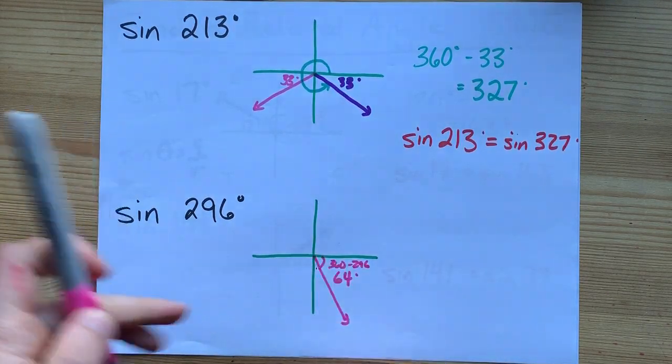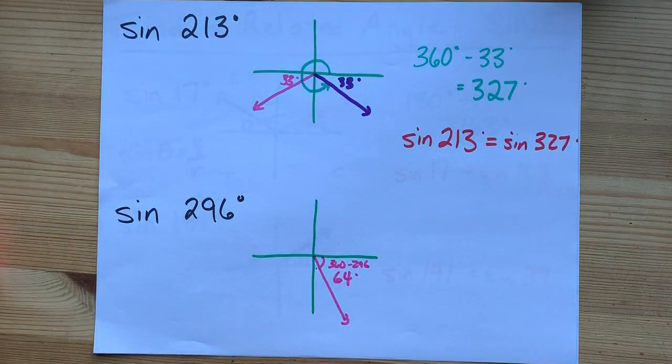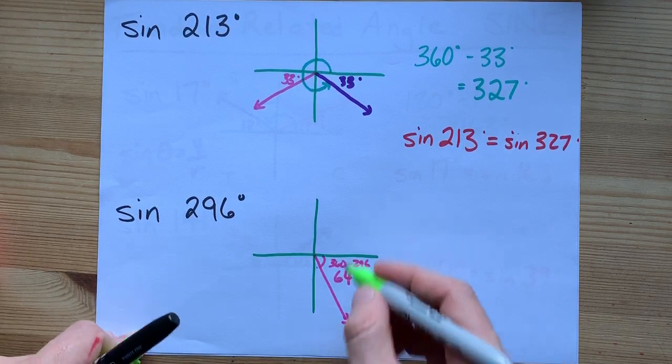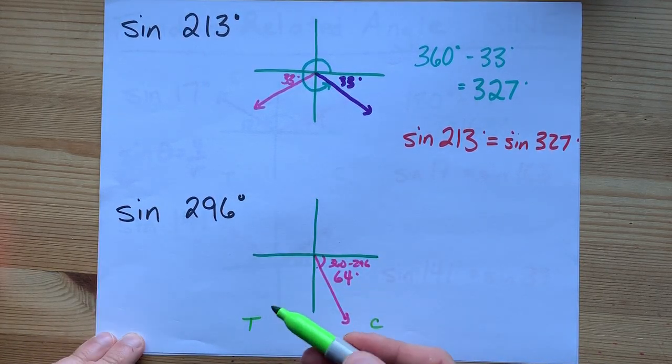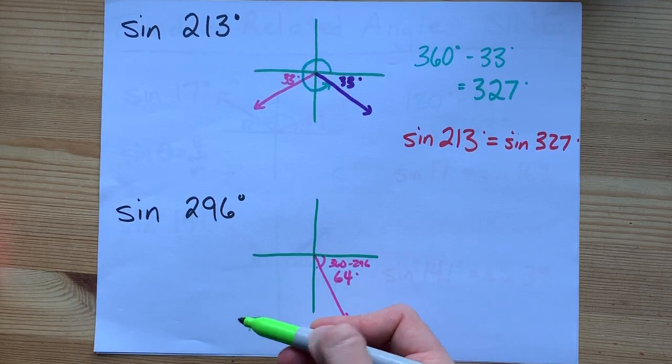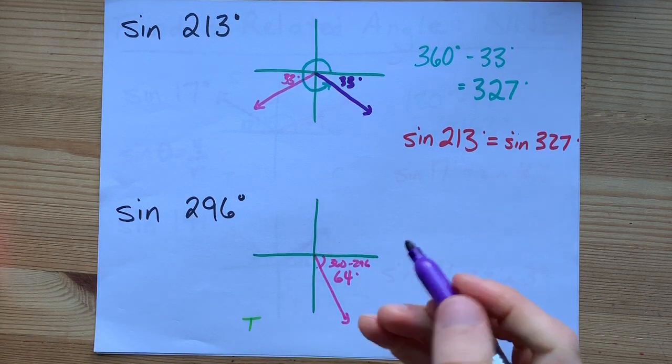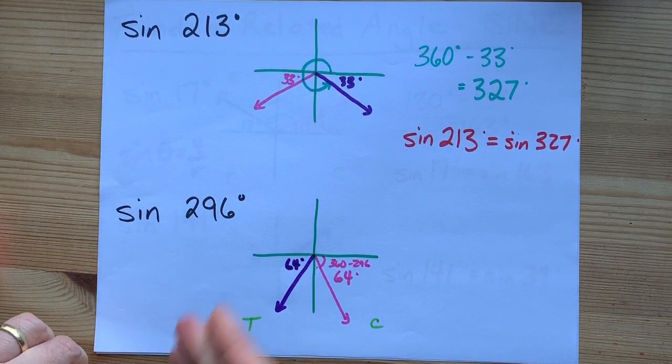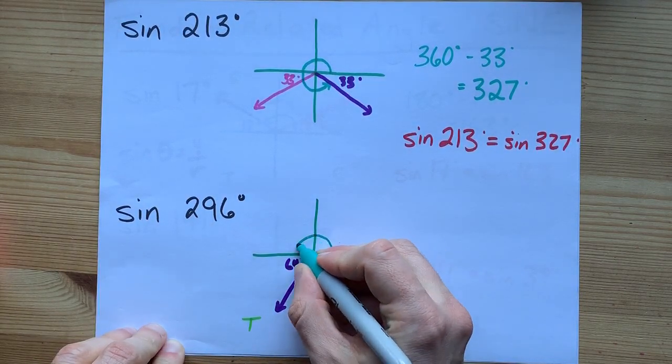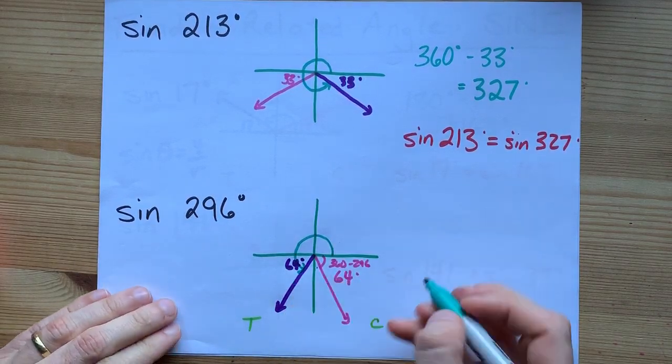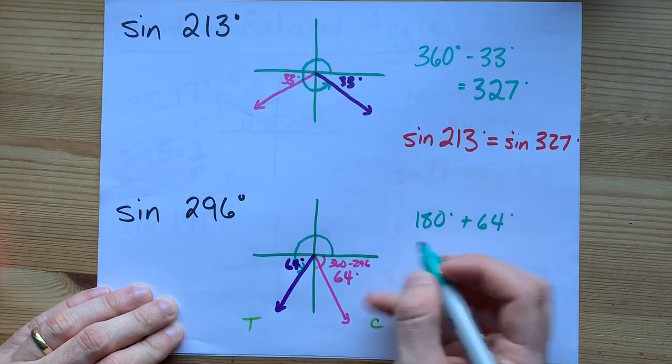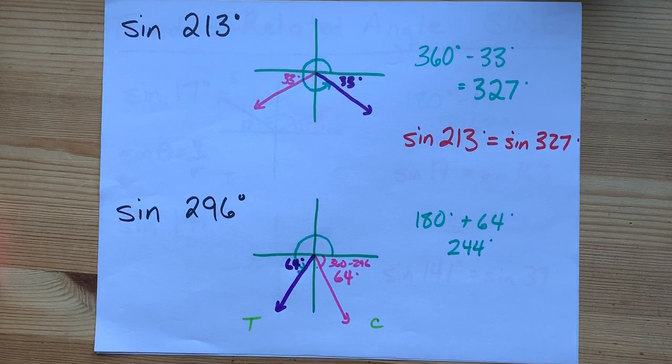But sine is negative there. Where else is sine negative? On the same side of the x-axis. This, by the way, is the cosine quadrant where only cos is positive. That's how I know sine is negative there. This is the tan quadrant, only tan is positive. So sine is negative there as well. You need to draw your terminal arm over there. Recognize that that's also a 64 degree angle. And then ask yourself, how big is the angle that lands me there? This one happens to be 64 degrees past 180. So it's 244.